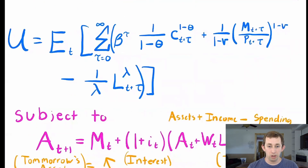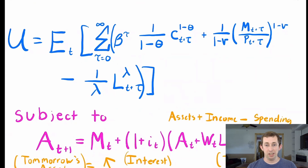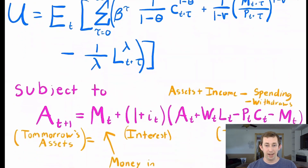Here is the problem we're going to work with today. Our utility is an expected value of the infinite future period utilities, where we have those future periods discounted by beta. We have consumption in CRRA form, real money demand MT over PT in CRRA form, and labor in CRRA form with a negative sign because we get disutility from working — we don't like labor.